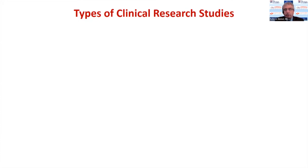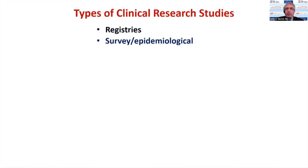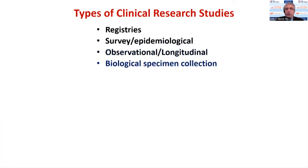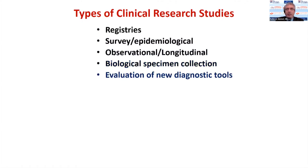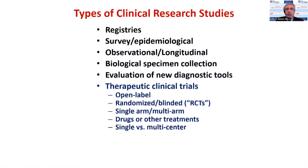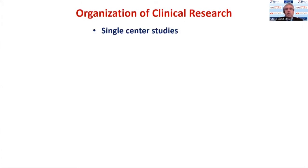There are many types of clinical research studies. Registries provide important information that we often can't get from clinical trials. Surveys and epidemiologic studies help us understand disease and bring new ideas. Observational longitudinal studies have added greatly to our understanding. Biological specimen collection is incredibly important for studying the basic science of these diseases. New diagnostic tools are developed, and then there are trials — open label, randomized blinded RCTs, single arm, and multi-arm.